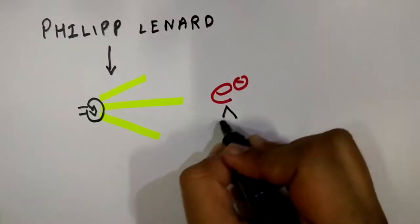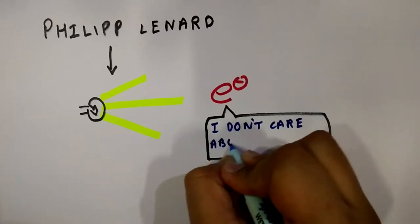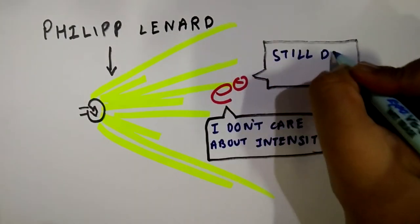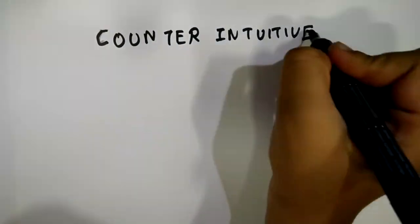An assistant of Hertz, Philip Leonard, later discovered that the intensity of the light did not have any effect on the maximum kinetic energy of the electrons that were emitted. Now for classical physics this was counterintuitive.